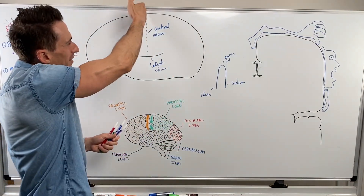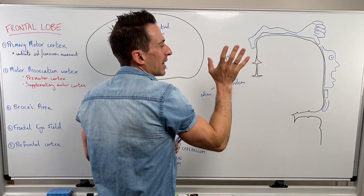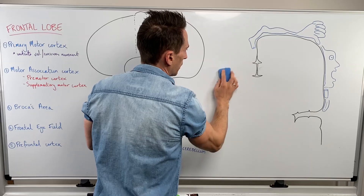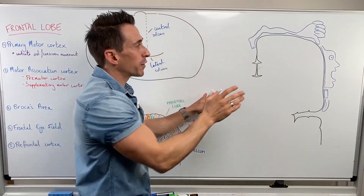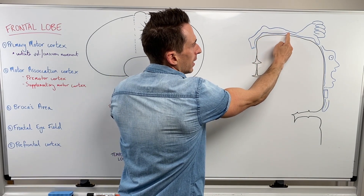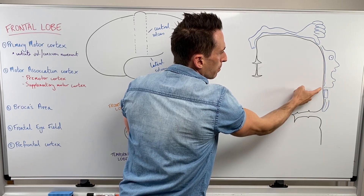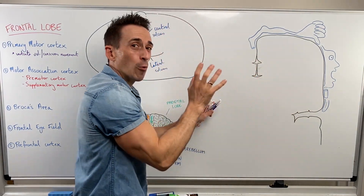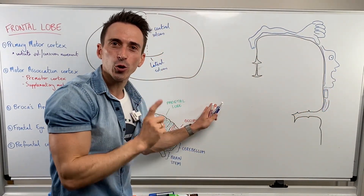If I were to cut down the central sulcus and have a look in, this is what we would see. The muscles of the foot are mapped here, then the muscles of the leg, the bum, the back, the arm, the hand, the neck, the face, the eyes, the mouth, the pharynx, the larynx, and the tongue. This is how we map the skeletal muscles of the body onto the primary motor cortex.